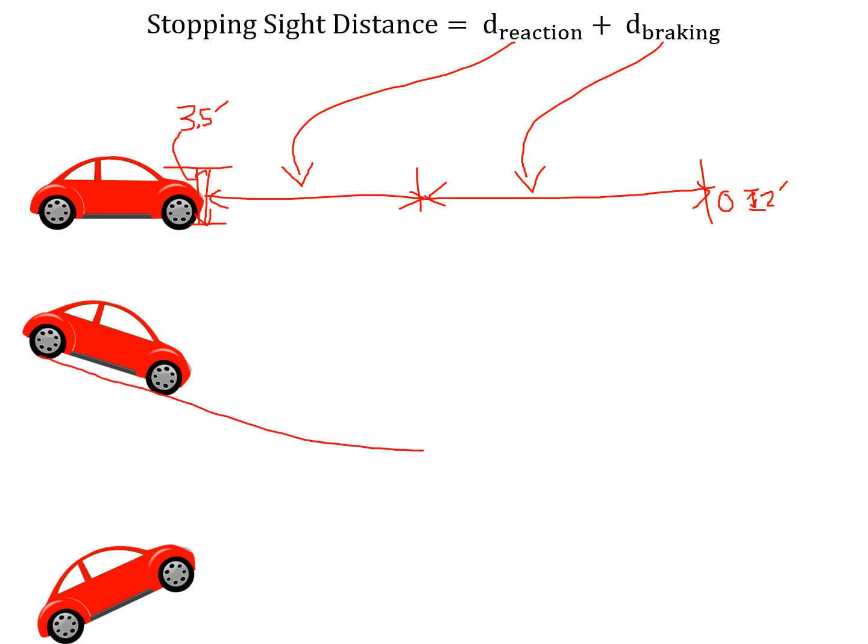SAG vertical curves can also create issues. In a SAG vertical curve, what we're looking for is the roadway that's illuminated by the vehicle's headlights. If you have some hazardous object that's beyond those headlights, the driver cannot see until the headlight illuminates that object. So that's the issue we're worried about for SAG vertical curves.